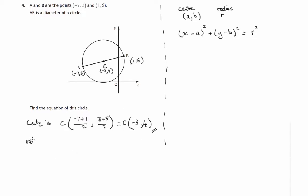The radius will be the distance from that center out to the circumference, so either it's cb or ca. Let's choose c to b.